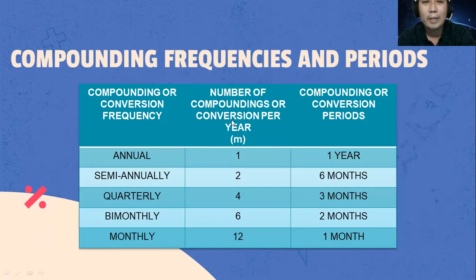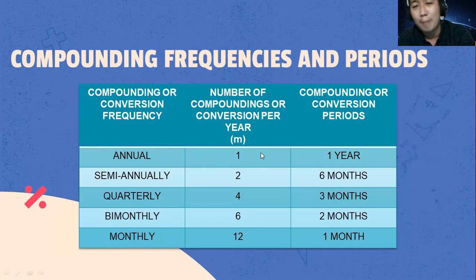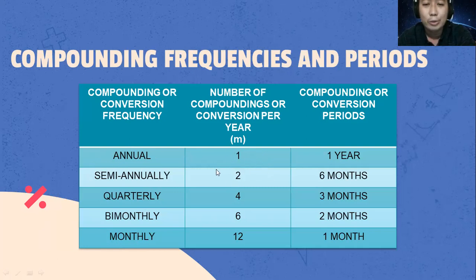These are the compounding frequencies and periods. Annual compounding is 1 conversion per year. Semi-annually is 2. Quarterly is 4. Bimonthly is 6. And monthly is 12.